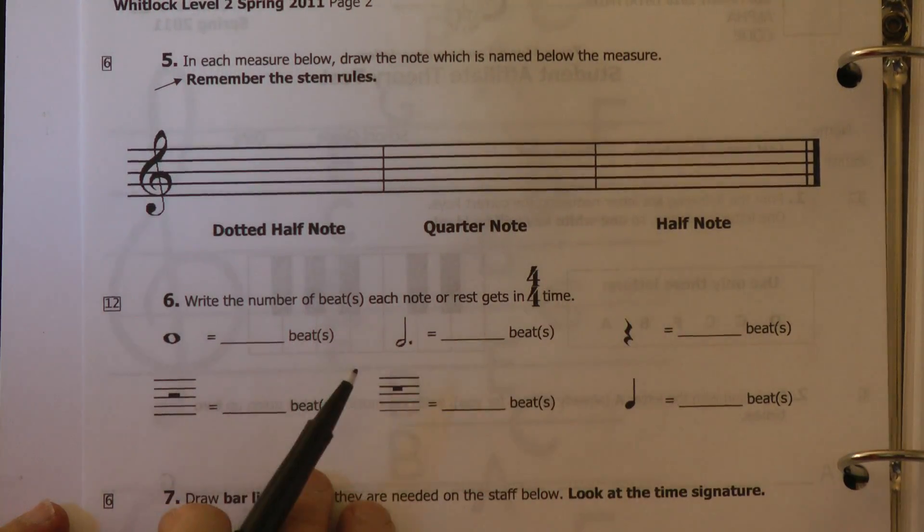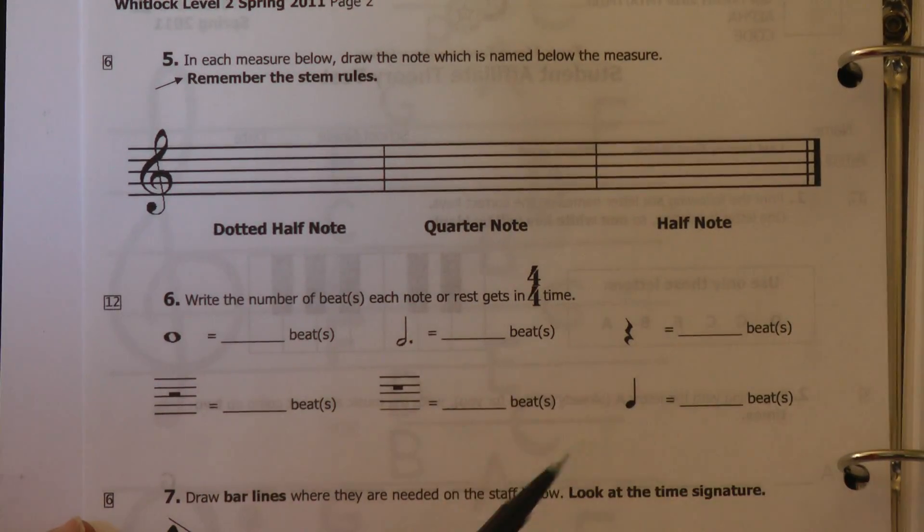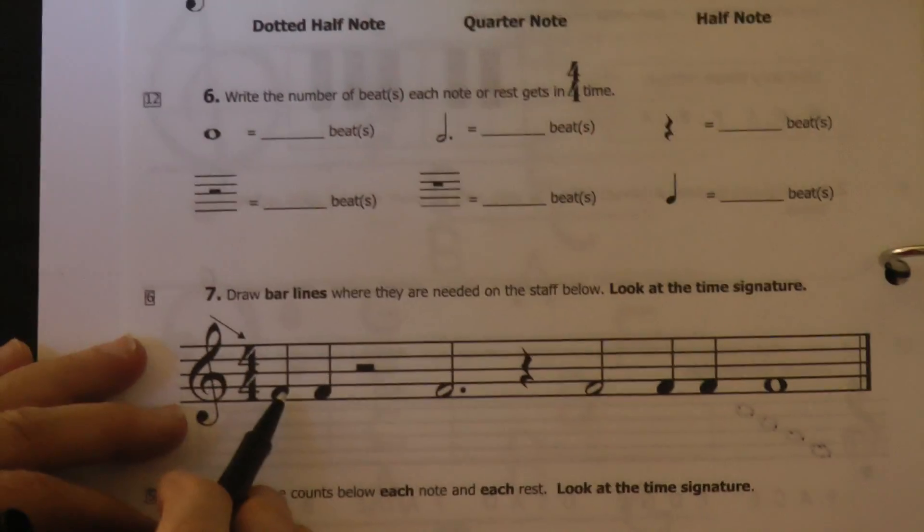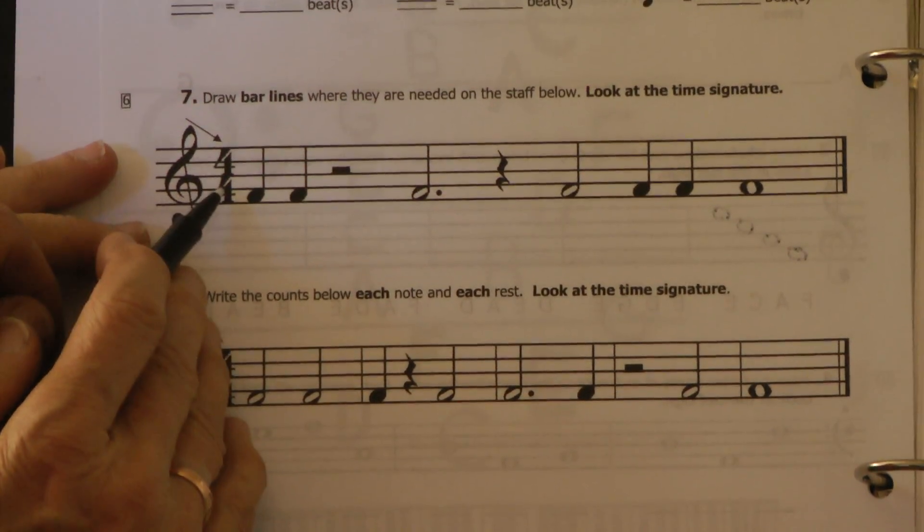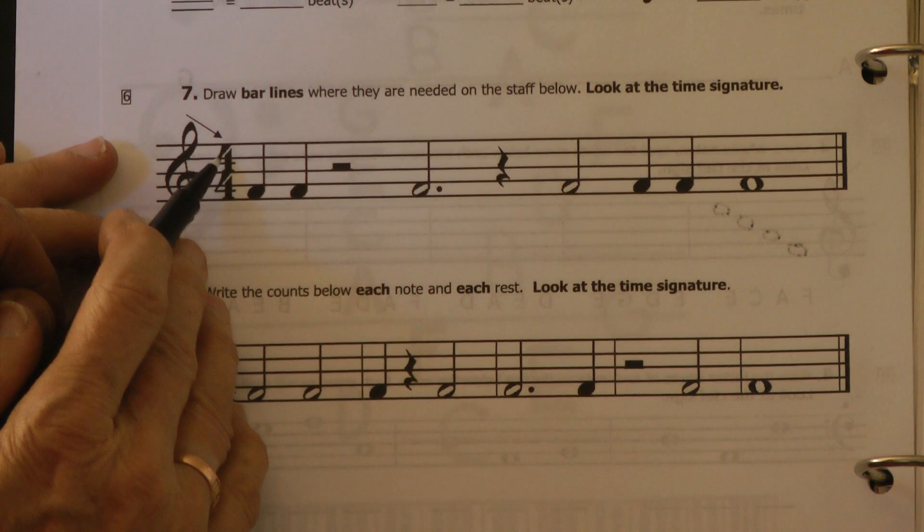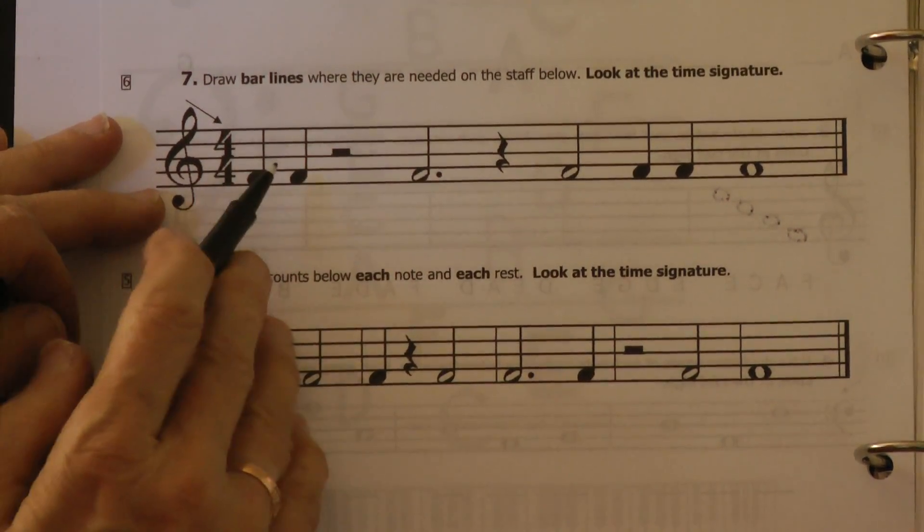When you're watching this video, you don't need to have your book. I don't want you to write any answers, but you can talk along with me and make sure you understand it. We're going to draw bar lines over here, and we need to have four beats in every measure. Remember, 4-4 time. Top number, how many beats in the measure. Bottom four means that the quarter note gets one beat.